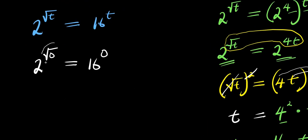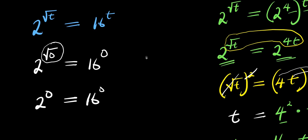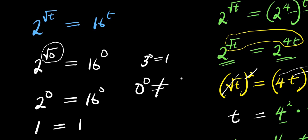The square root of 0 is 0, so we have 2^0 = 16^0. Any number raised to the power of 0 equals 1 — the only exception is 0^0. So 2^0 = 1 and 16^0 = 1, giving 1 = 1. This satisfies the equation.